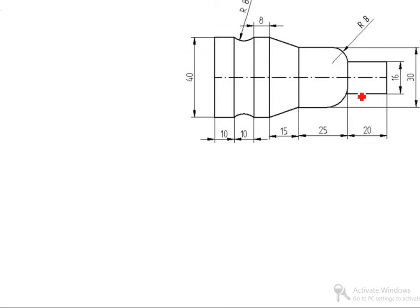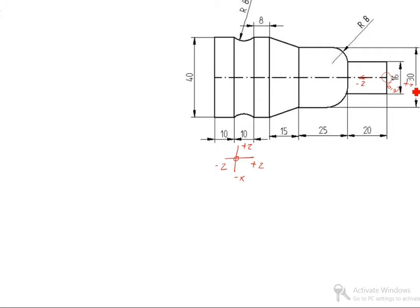Today we will learn the turning program. We will start from here. This is 0,0 — the origin point. This is plus Z, minus Z, minus X, plus X. So this is 0,0. This is minus Z, this is plus Z, this is plus X, this is minus X.